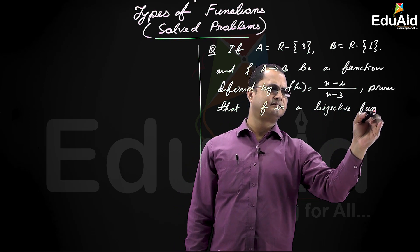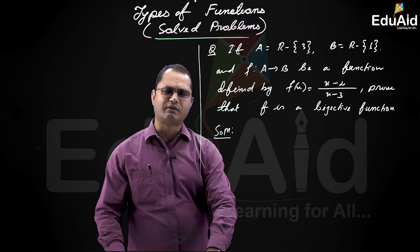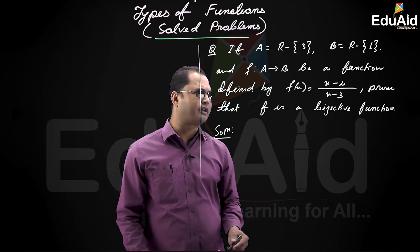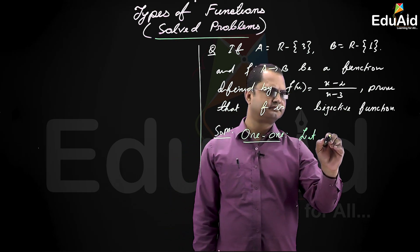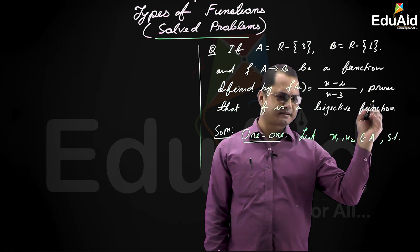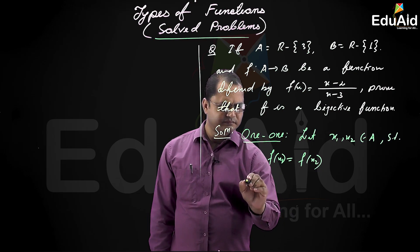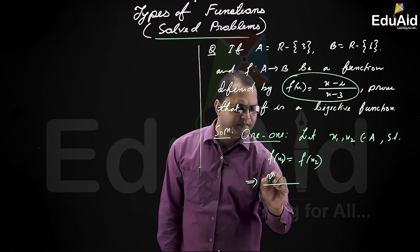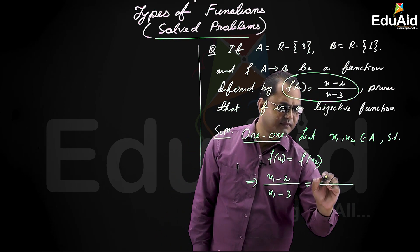A bijective function means it is both one-one and onto. So first, to prove f is bijective, we go ahead and prove it is one-one. Let x1, x2 belong to A such that f(x1) equal to f(x2). This implies that by the definition of f(x), f(x1) will be (x1 minus 2) divided by (x1 minus 3) is equal to f(x2).